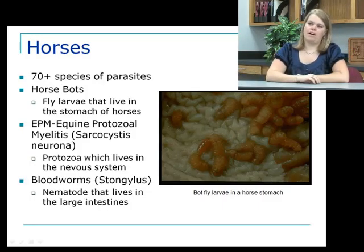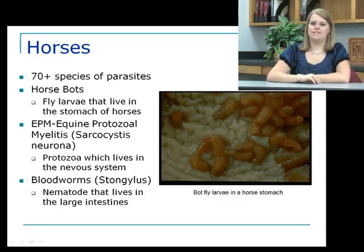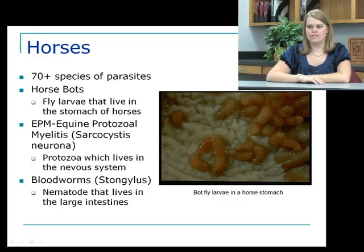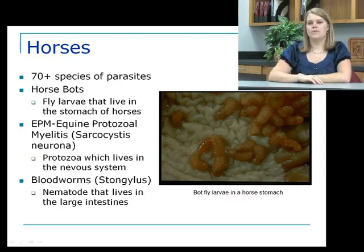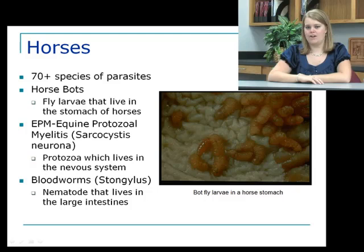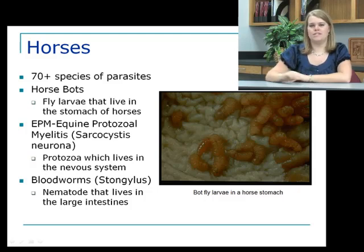The next species we're going to talk about are horses. They're unique because they have over 70 different species of parasites that can live in or on them. One major one is the horse bot — fly larvae that live and develop inside the stomach of the horse. They can cause a lot of problems with colic but are easily managed if you treat for them. Next is EPM, or equine protozoal myelitis, which lives in the nervous system and migrates through nerves in the brain, causing serious damage including death. Finally, bloodworms or Strongylus are nematodes that live in the intestinal tract and can cause blockages leading to colic.